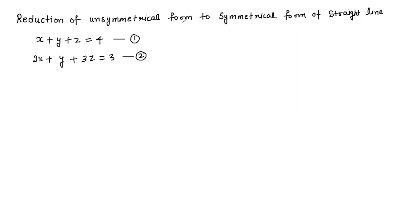What is the unsymmetrical form? When I have two intersecting planes given, they represent a straight line. If you intersect two planes, they intersect on a straight line. Suppose this is plane 1 and this is plane 2 — this is the intersecting line. So two planes are always intersecting in a straight line.